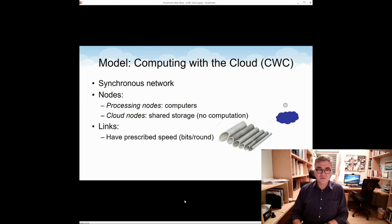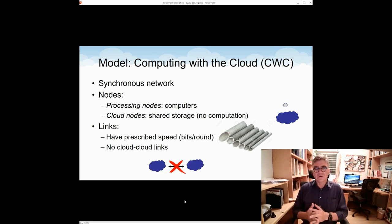Regarding links, we assume that every link has a prescribed speed, meaning how many bits can the link carry in a round to its other end. And since in our model cloud nodes are passive, there are no links connecting to cloud nodes.